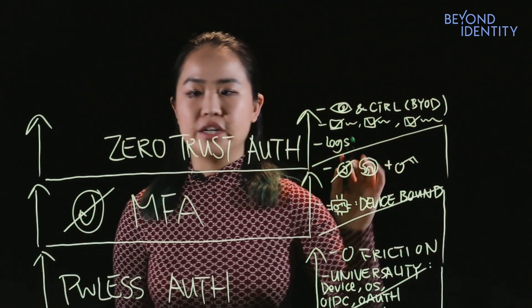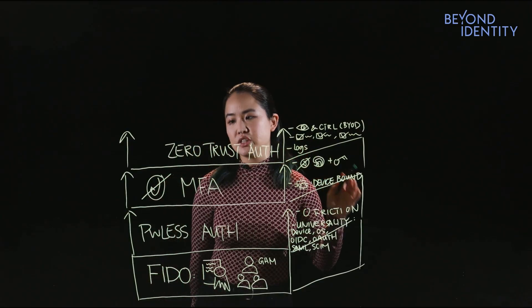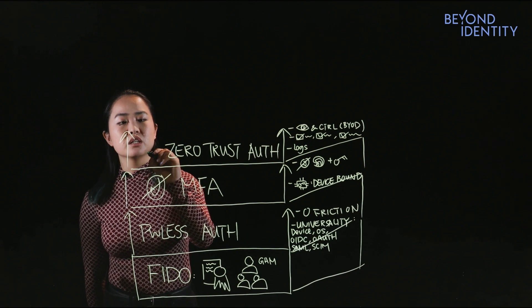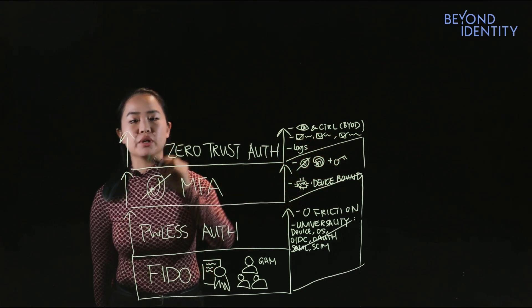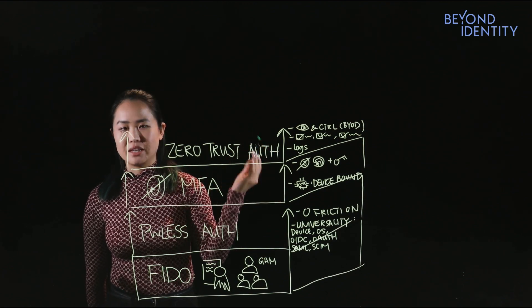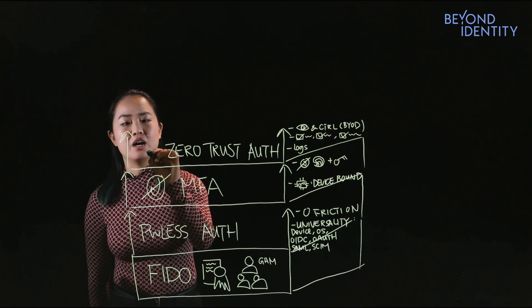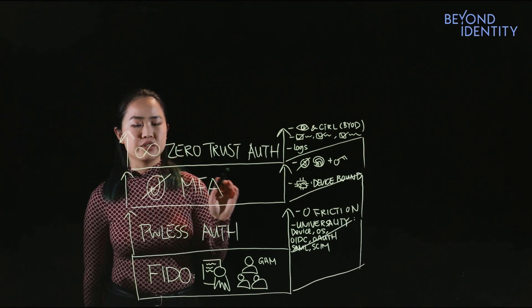So once you have all of this, right, zero trust authentication, never trust, always verify also involves a time element. Because just because you authenticate a user once and their device passes the initial checkpoint does not mean that that device stays in compliance forever. So for example, a user may turn off their firewall by accident.